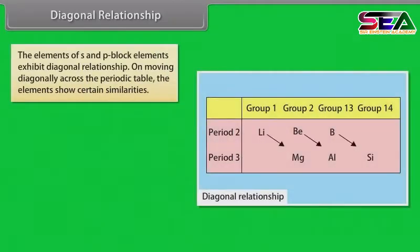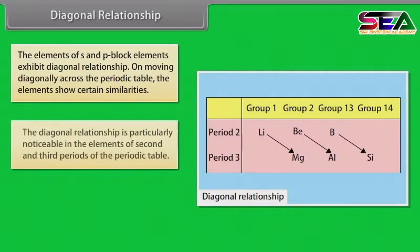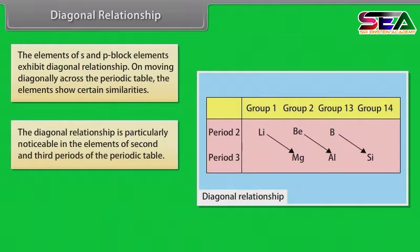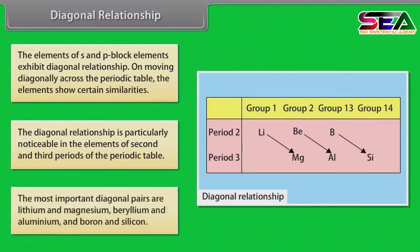The elements of S and P-block exhibit diagonal relationship. On moving diagonally across the periodic table, the elements show certain similarities. This diagonal relationship is particularly noticeable in the elements of the second and third periods. The most important diagonal pairs are lithium and magnesium, beryllium and aluminium, and boron and silicon.